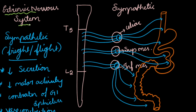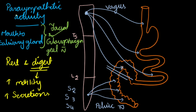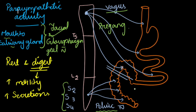Regarding the extrinsic nervous system: in sympathetic activity, preganglionic fibers arise from T5 to L2, synapse in three ganglia — celiac, superior mesenteric, and inferior mesenteric — and from there postganglionic fibers supply the whole GI tract. Sympathetic activity is mainly during fight-or-flight response, causing decrease in secretion, decrease in motor activity, contraction of GI sphincters, and vasoconstriction.